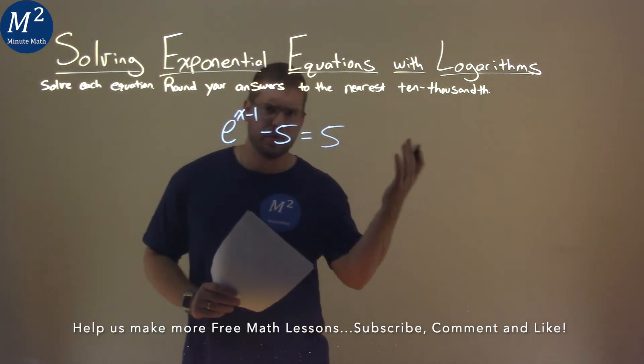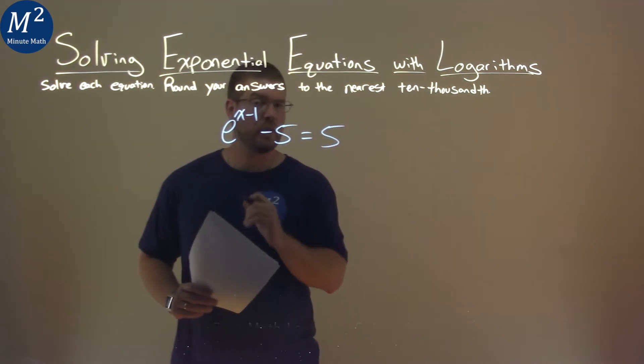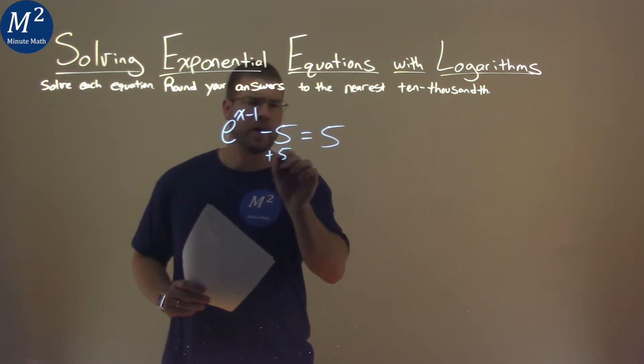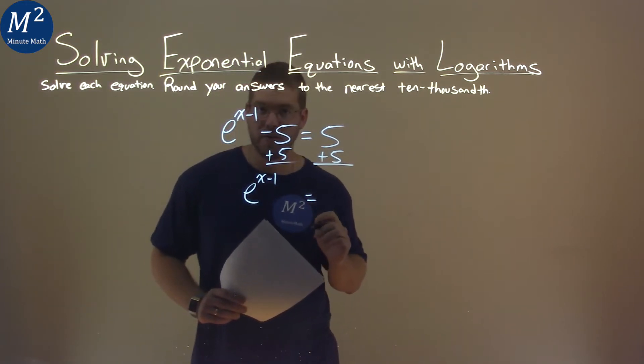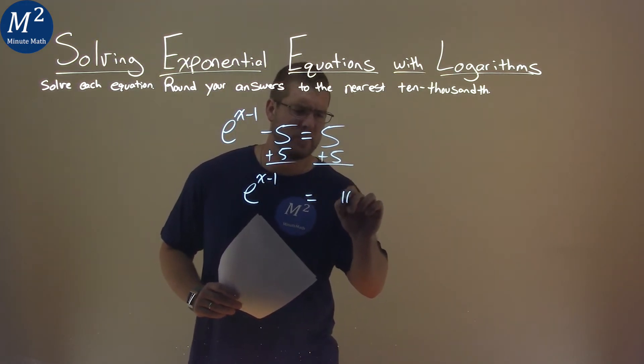Well, first thing, I'm going to add 5 to both sides, so let's try to get e to the x minus 1 by itself. So I add 5, pretty simple, to both sides here, and I'm left with e to the x minus 1, and that's going to be equal to 5 plus 5, which is 10. You should get that.